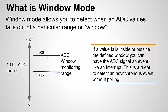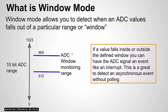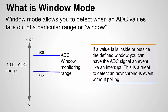You might say you can just do that in the main loop - take a reading and check if it's outside a certain value - and of course you can. But what's nice about window mode is if you have a complex program with a lot going on, you can't keep polling different things. Window mode runs in the ADC peripheral; the CPU can do other things, and when the event occurs the ADC signals an interrupt and you take your action. That's what's really nice about window mode for asynchronous ADC events.